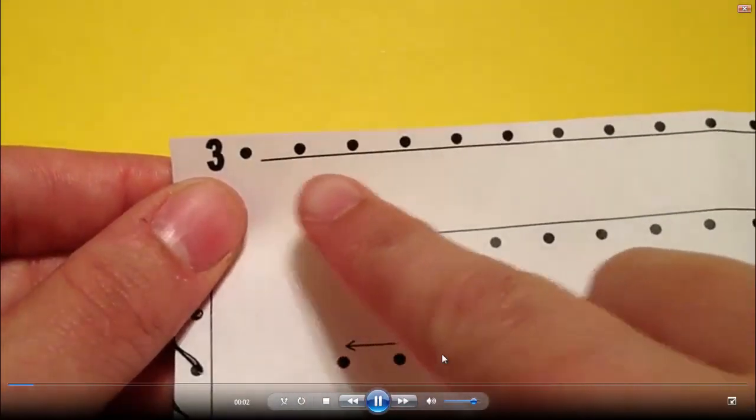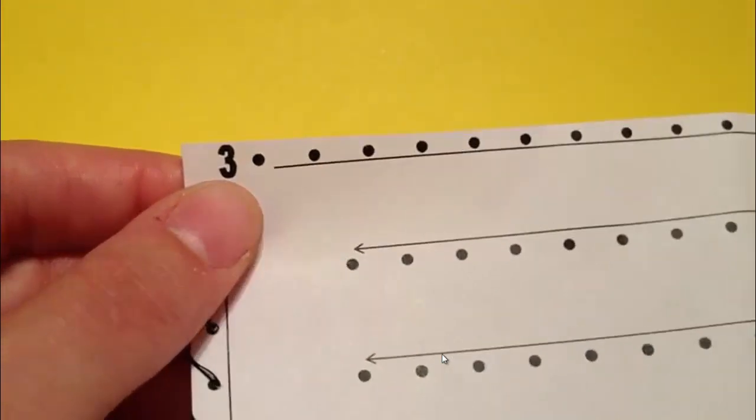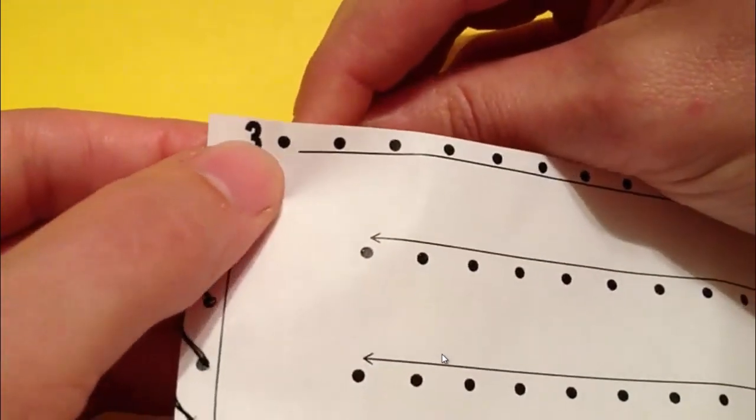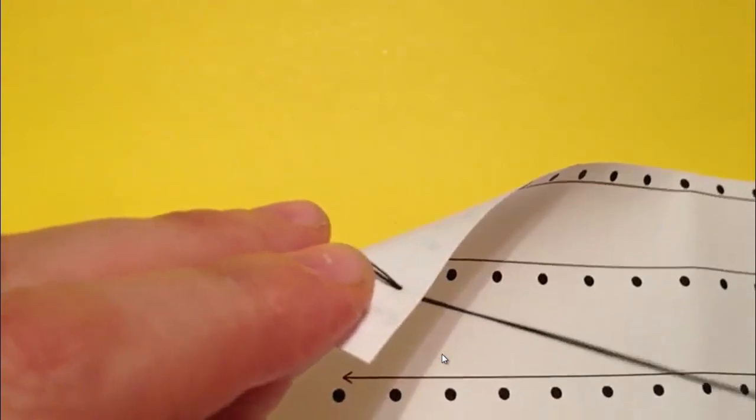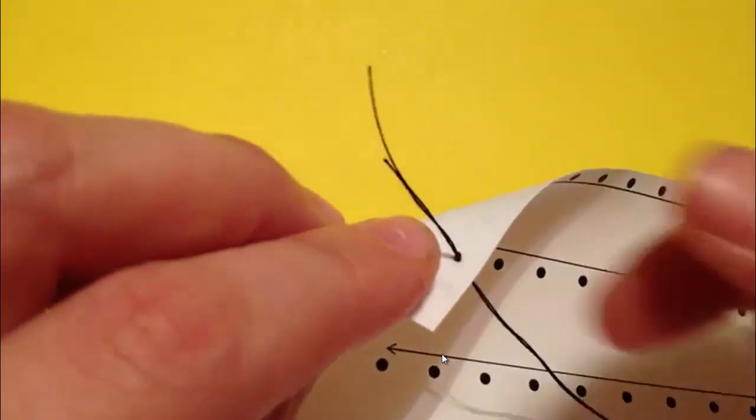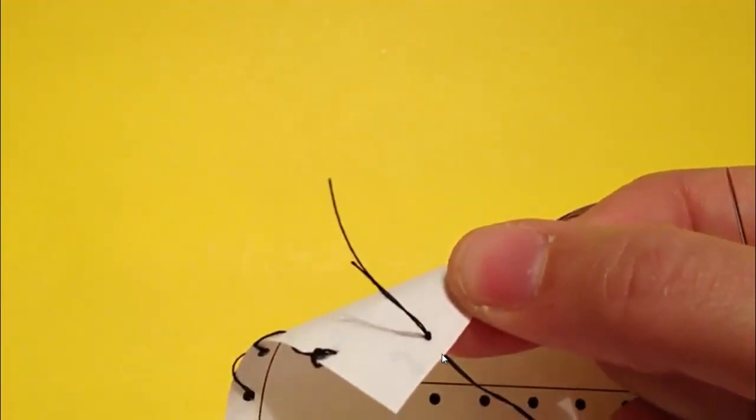We've done row one and two, now we're going to move to three, which again goes left to right. We're going to start the same way, coming up through the first hole, but we're going to do something a little different. Go ahead and we're going to pull through until the knot's there, and then we'll tape it in place on the paper.